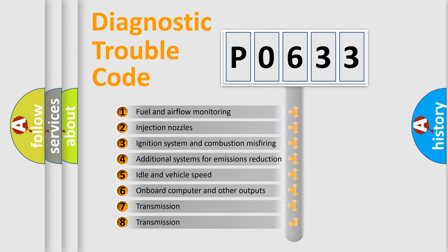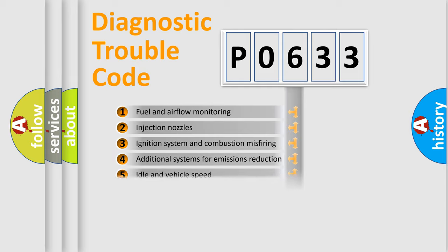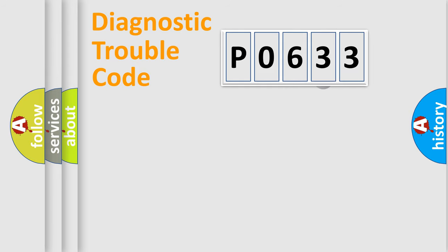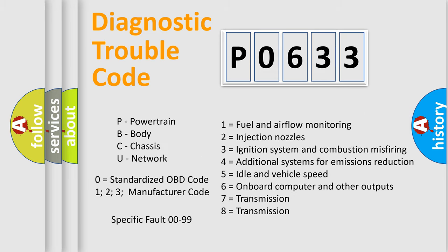The third character specifies a subset of errors. The distribution shown is valid only for the standardized DTC code. Only the last two characters define the specific fault of the group. Such a division is valid only if the other character code is expressed by the number 0.